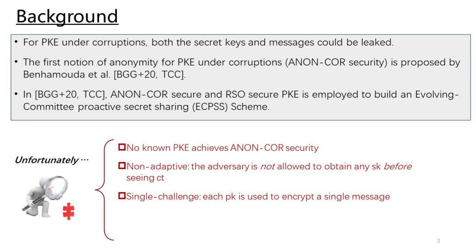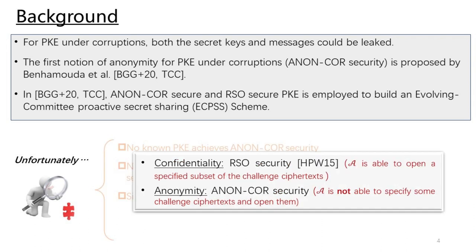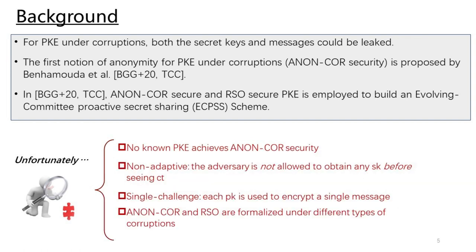Unfortunately, there are still some problems left. No known PKE achieves their anonymous CLR security. The adversary is not allowed to obtain any secret key before seeing a ciphertext, and each public key is used to encrypt a single message. Moreover, both confidentiality and anonymity under corruptions are needed for constructing an ECPSS scheme. But we noticed that for RSO security, the adversary is able to open a specified subset of the challenging ciphertexts, while for anonymous CLR security, the adversary does not have this ability. So these two security notions are formalized under different types of corruptions.